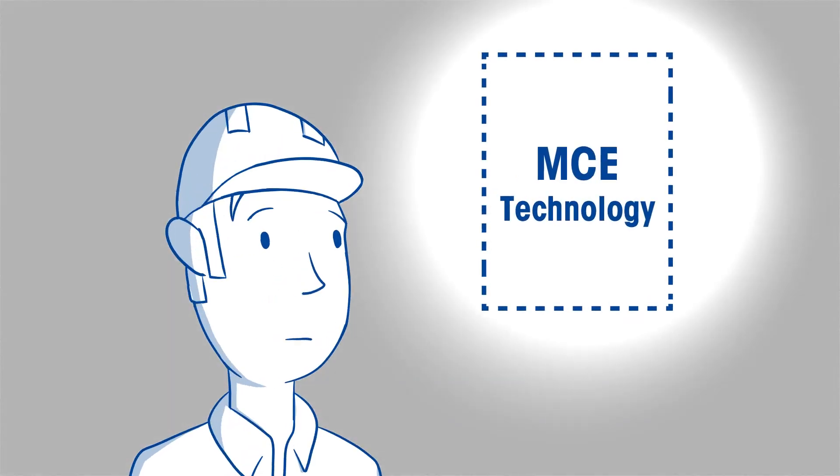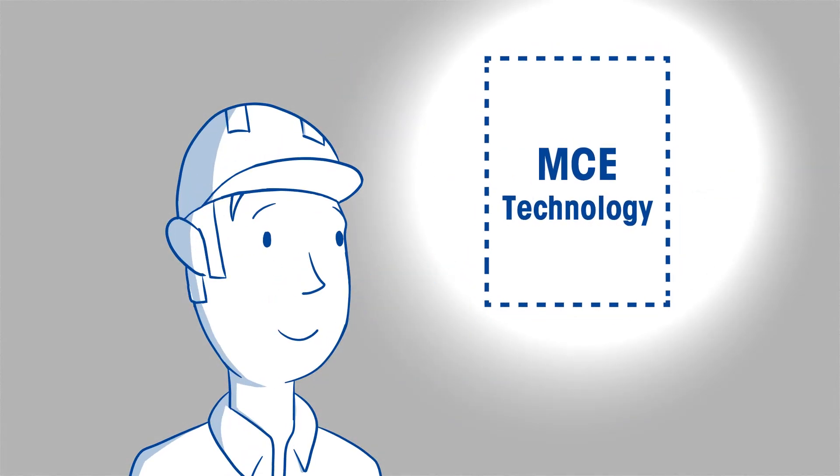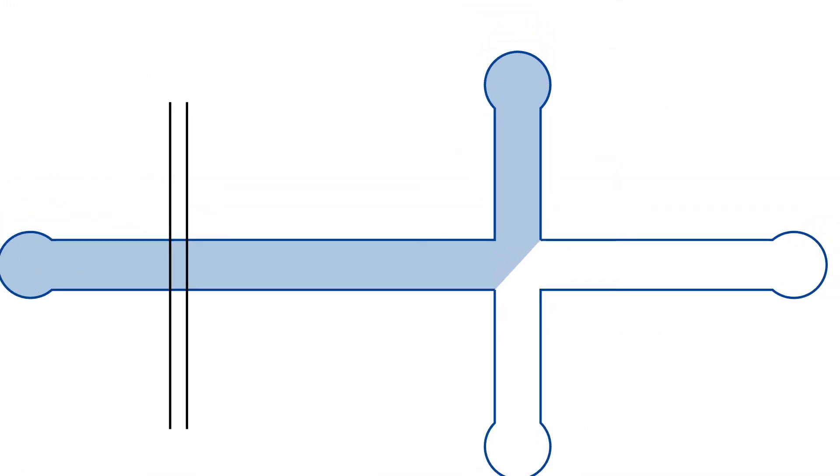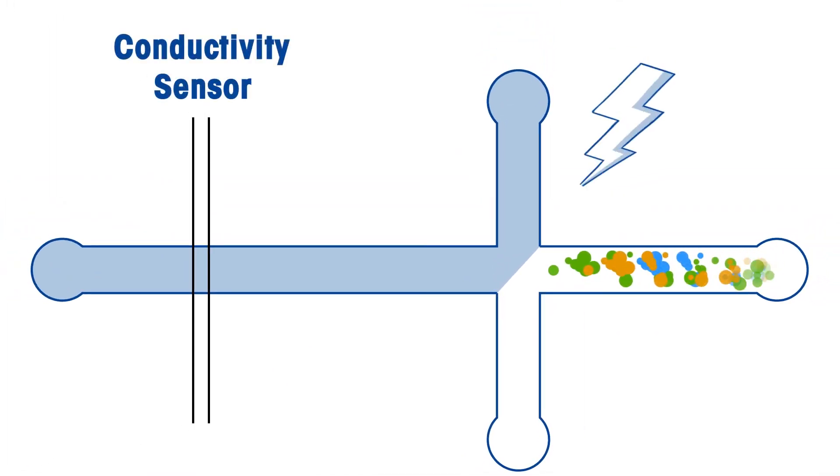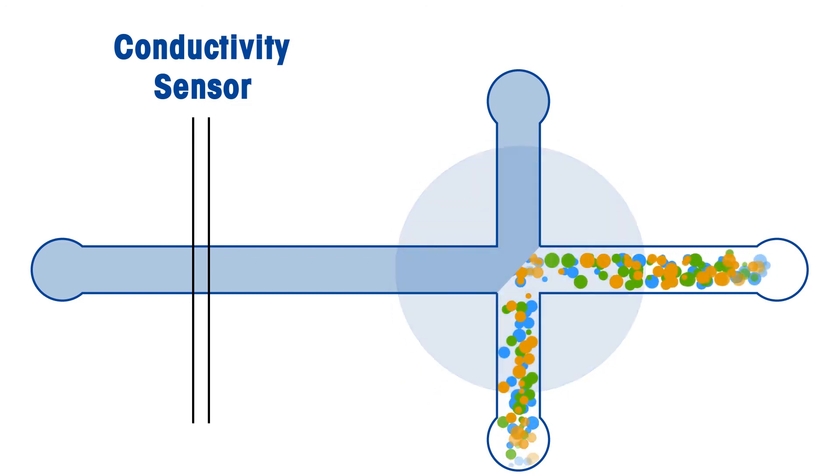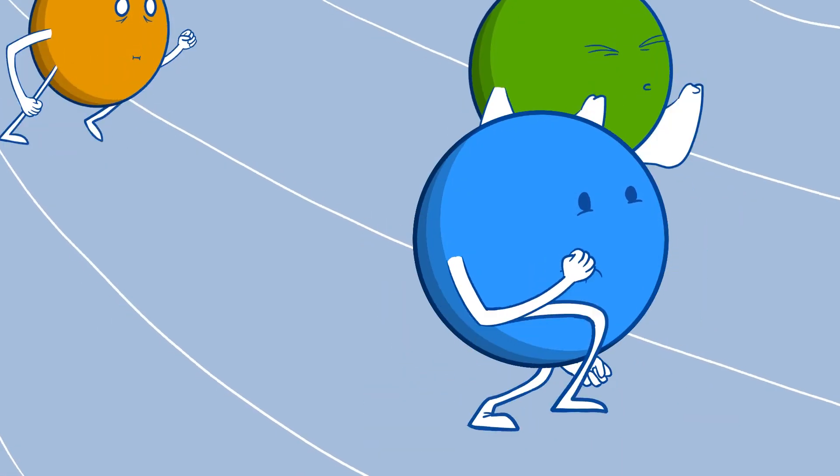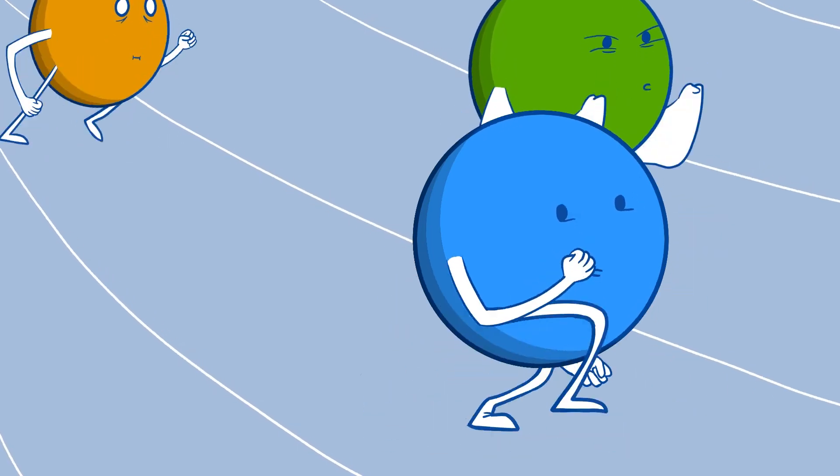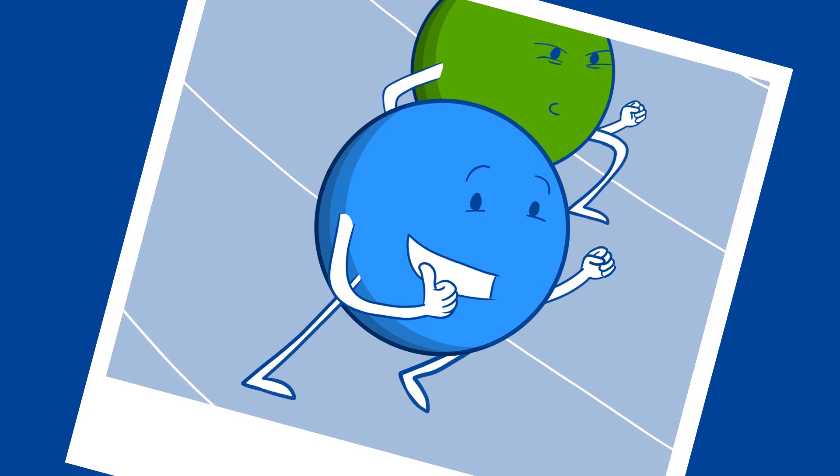Microfluidic capillary electrophoresis, MCE, fills this need. MCE uses an electric field to separate ions in a capillary on a cartridge based on their mobilities. Different ions move through the capillary at different speeds, and they eventually pass a conductivity sensor near the end of the capillary where the response is based on their concentration.